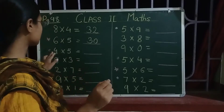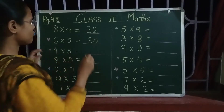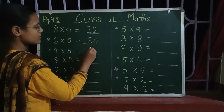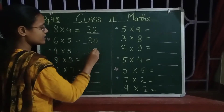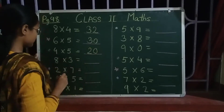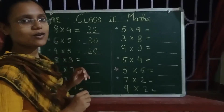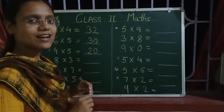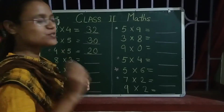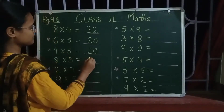What is 4 into 5? 4 fives are 20. What is 8 threes are? 8 threes are 24.